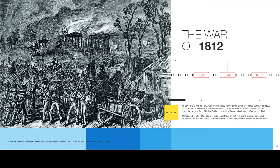The War of 1812: to pay for the war, Congress passed new internal taxes on refined sugar, carriages, distillers, and auction sales, and reinstated the Commissioner of Revenue to collect them. On August 24th, 1814, the British burned the Treasury Building in Washington, D.C. Well after the Revolutionary War, the young Americans had just got done fighting for their freedom, and the British still came back and burned the Treasury Building. On December 23rd, 1817, Congress repealed these and all remaining internal taxes and abolished the position of Commissioner of Revenue, abolishing the revenue system in 1817.